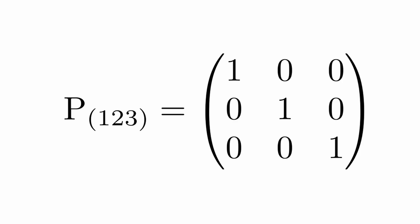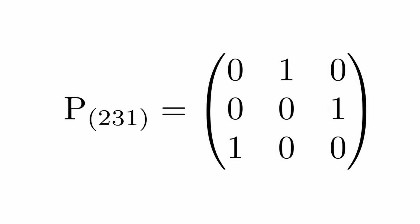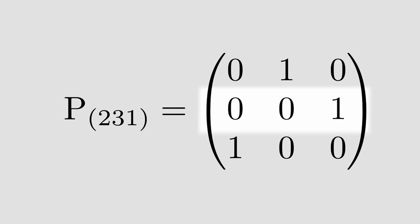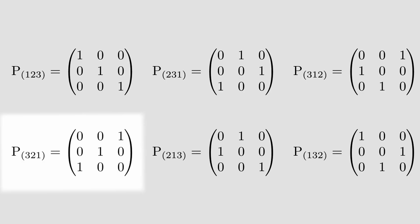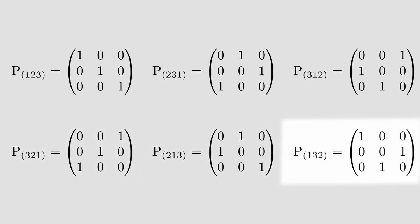But P times A is also equal to P times I times A, where I is just the identity matrix. Since P permutes the rows of I, the permutation matrices are just the identity matrices with their rows permuted. Let's look at the six 3x3 permutation matrices. We can label them by how they permute the rows: P sub 1,2,3 equals the identity matrix; P sub 2,3,1 has the second row of the identity in its first row, the third row in its second row, and the first row in its third row; and so on for P sub 3,1,2, P sub 3,2,1, P sub 2,1,3, and P sub 1,3,2.